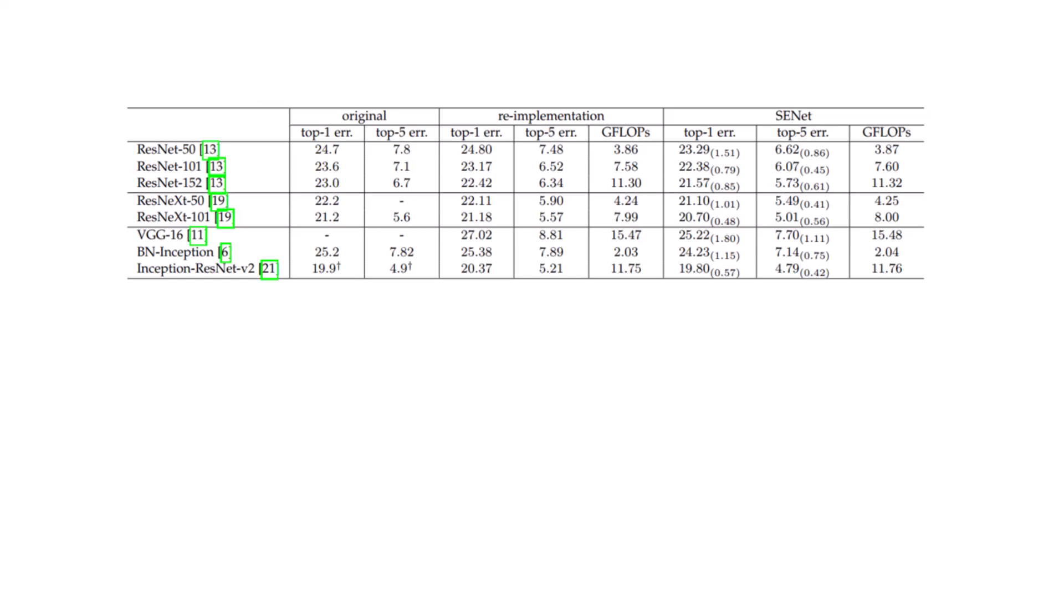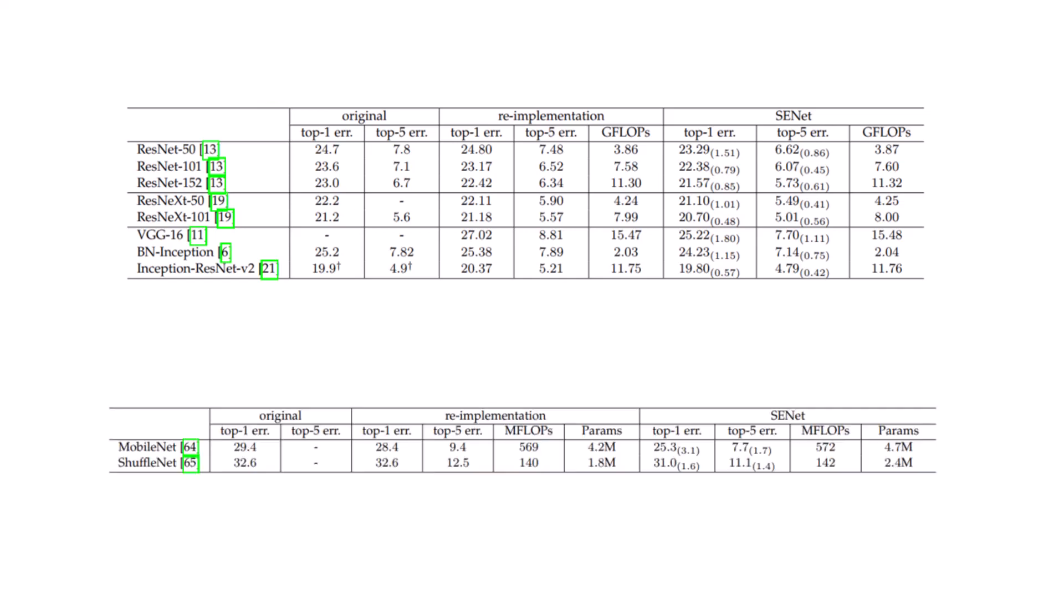And for the other models, it also performs better when we add SENet, which I won't go into the detail. The next thing they did is that they compared the mobile settings, which are MobileNet and ShuffleNet, and even in these scenarios, adding SENet causes them to work better, while we only need to add a few flops, which is not very important.